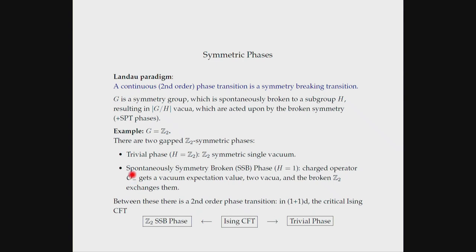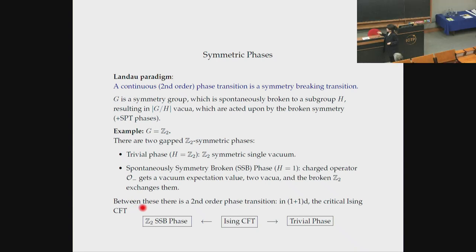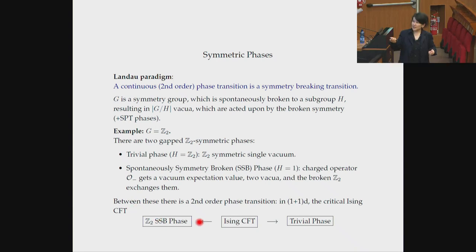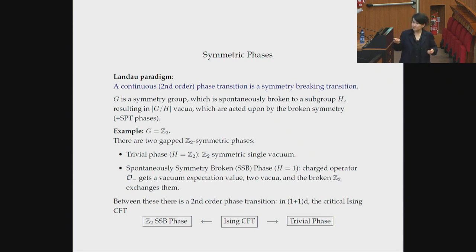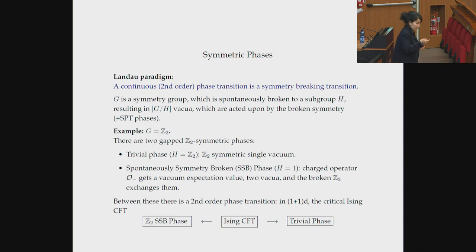If I look at this in a two-dimensional system, essentially these two things would be gapped phases — the topological phases. The second one is characterized by a non-trivial vacuum expectation value for an order parameter that's charged, so it's a charged operator that gets a non-trivial vacuum expectation value. If there's a transition between these two phases, looking at this phase diagram, there is a critical model which is the Ising conformal field theory — a gapless theory that sits between these — as the phase transition between the trivial and spontaneously broken symmetry phase.